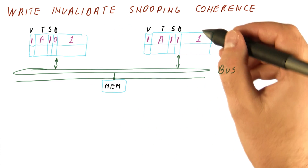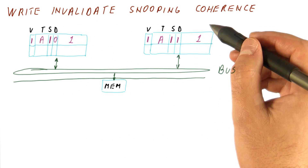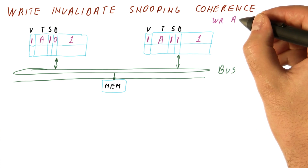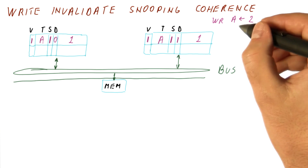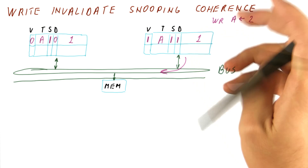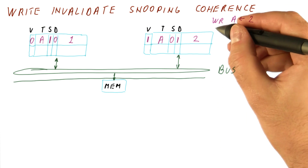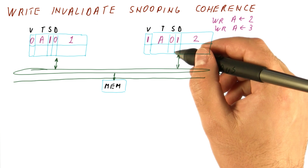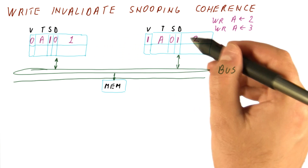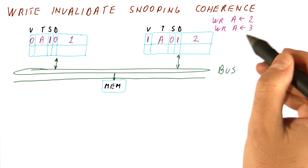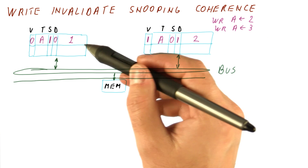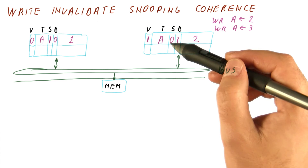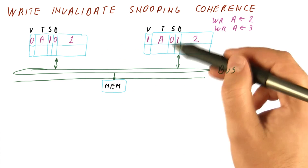The disadvantage of write invalidate protocols is that there is a miss on all the readers when somebody writes. However, there is an advantage: if you need to update the same block multiple times — say you write two to A — the first write invalidates the other copy by broadcasting. Now the block is no longer shared. For any subsequent reads and writes, they can all be done locally without broadcasting. By invalidating the other copy, we made ourselves the only one with the block.